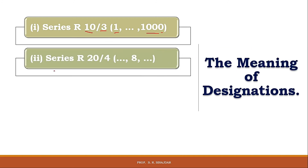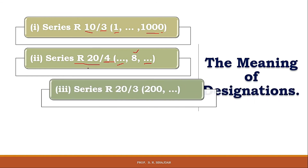The second notation is R20/4 (…8…). This indicates a derived series comprising every fourth term of the R20 series, unlimited in both directions — meaning no initial or final condition is specified — but the number 8 must be included inside the series. Unlike the previous case where initial and final limits were given, here only the required intermediate value of 8 is specified.